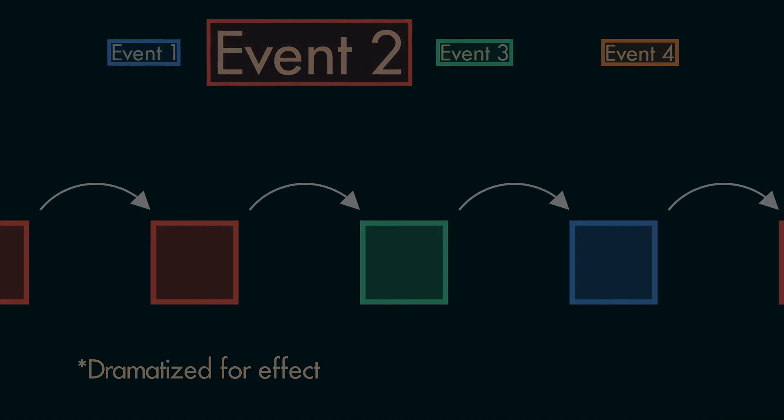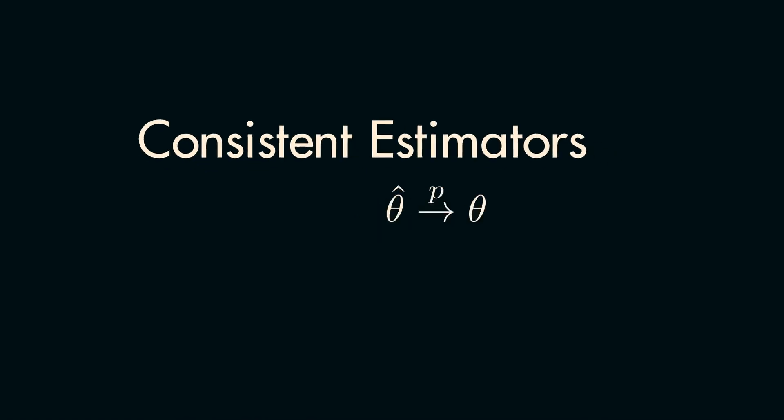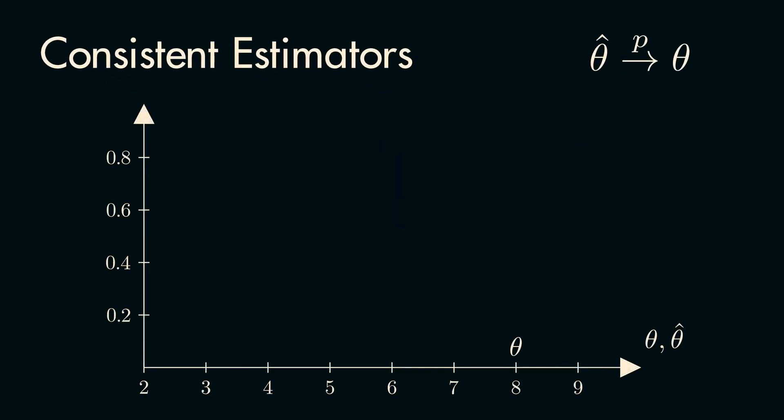Outside of the weak law of large numbers, you'll also see this idea when discussing consistent estimators. In this case, an estimator is called consistent if, as you use more data points with the estimator, the estimate converges in probability to the true value of the parameter being estimated.